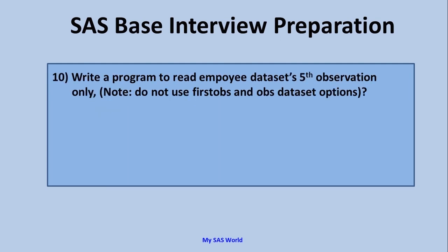Write a program to read employee data set's fifth observation only, without using the firstobs and obs data set options. Using the _N_ variable, you can accomplish this task. Create a data set called read_fifth_observation, set the employee data set, and condition: when the value of _N_ equals five, that observation is written to the read_fifth_observation data set.